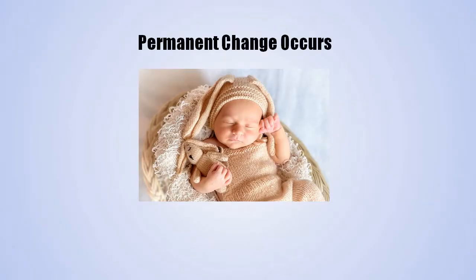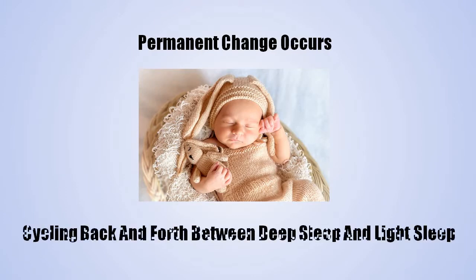At around the age of 4 months, baby's sleep pattern changes. This can happen as early as 3 months or as late as 5 months. Premature babies will be age-adjusted according to their due date. At this time, a permanent change occurs in your baby's brain, and that change means that your sweet child moves from sleeping in deep sleep most of the time to cycling back and forth between deep sleep and light sleep.